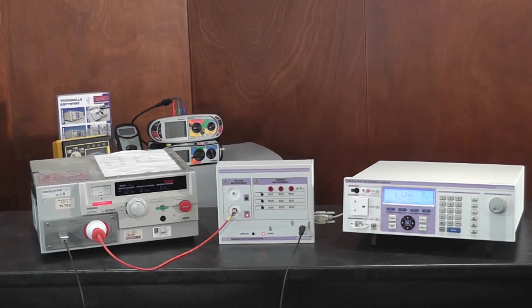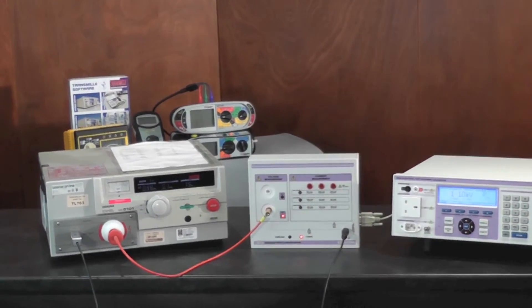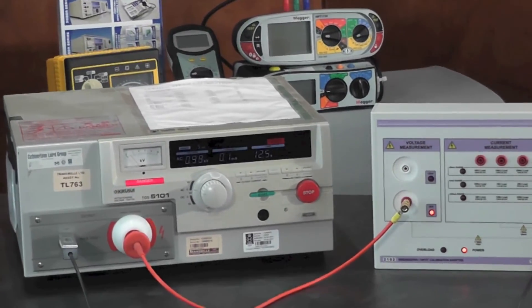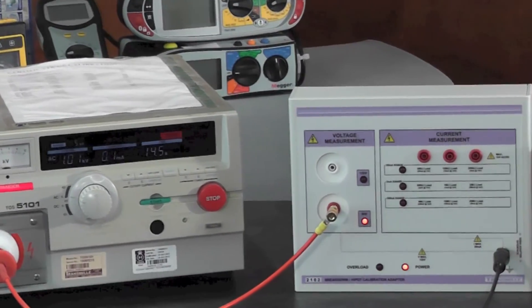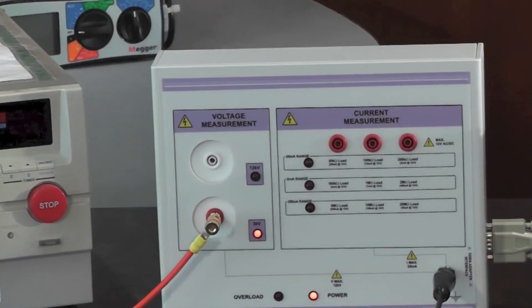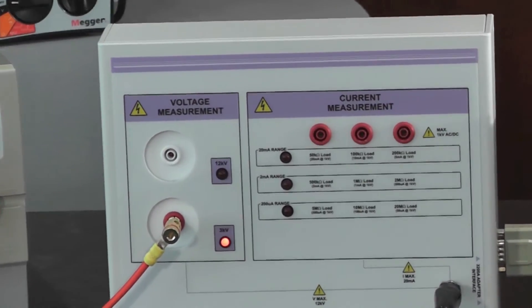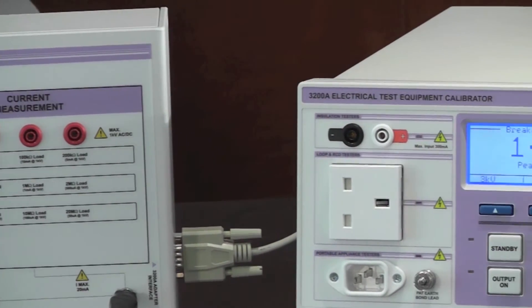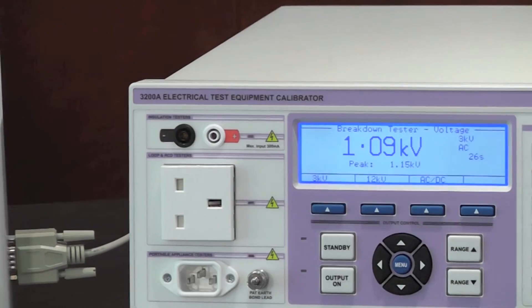The 3200A provides a unique solution for calibration of breakdown and high pot test adapters using the external breakdown adapter. Using the external adapter, voltages of up to 12 kV AC can be measured with loading of up to 20 milliamps. This makes calibrating these dangerous instruments safe.